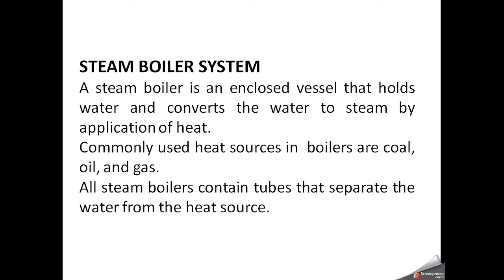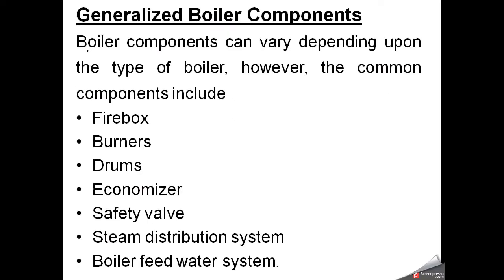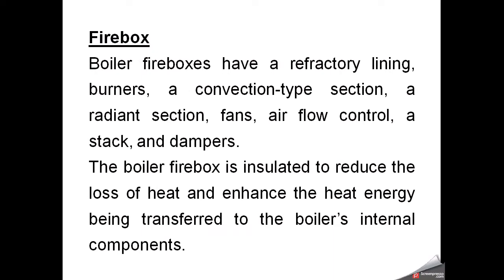All steam boilers contain tubes that separate the water from the heat source. The generalized components of the boiler which are present normally in many types of boilers are: firebox, burners, drums, economizers, safety valves, steam distribution system, and boiler feed water system.